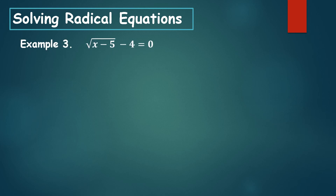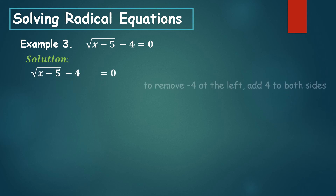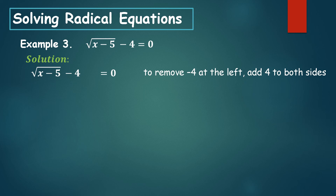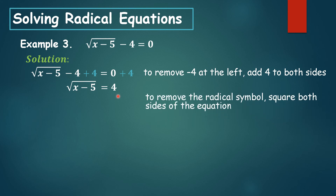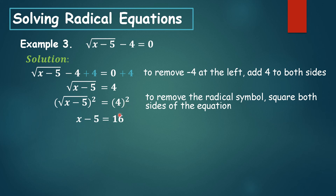Example number 3: the square root of the difference of x and 5, minus 4, is equal to 0. To remove negative 4, add 4 to both sides of the equation. Negative 4 plus 4 is 0, so at the left you have the square root of x minus 5. To remove the radical symbol, square both sides of the equation. Cancel the radical and exponent 2, giving x minus 5 at the left, and 4 squared is 16.